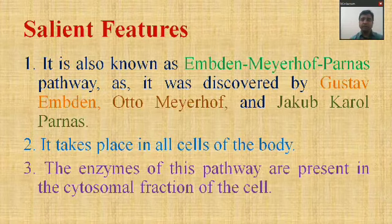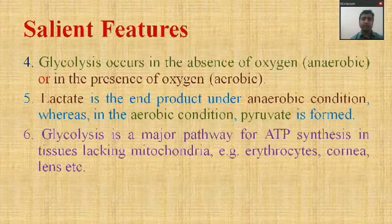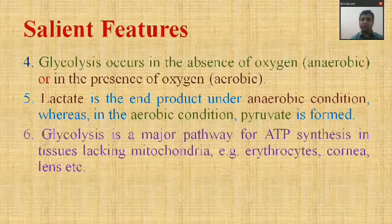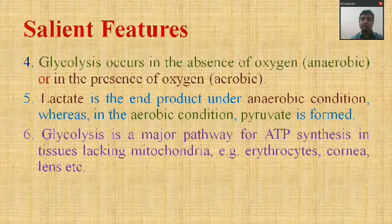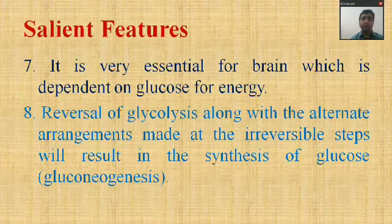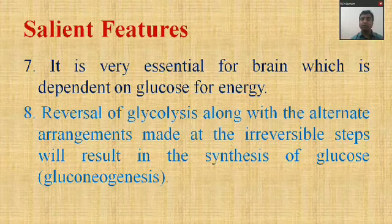The salient features of glycolysis: each reaction is catalyzed by a certain enzyme. Glycolysis occurs under both aerobic and anaerobic conditions. In aerobic conditions the end product is pyruvate, whereas in anaerobic conditions the end product is lactate. There is a net generation of two ATP molecules. The reverse of glycolysis is called gluconeogenesis, in which glucose is formed from non-carbohydrate carbon sources.